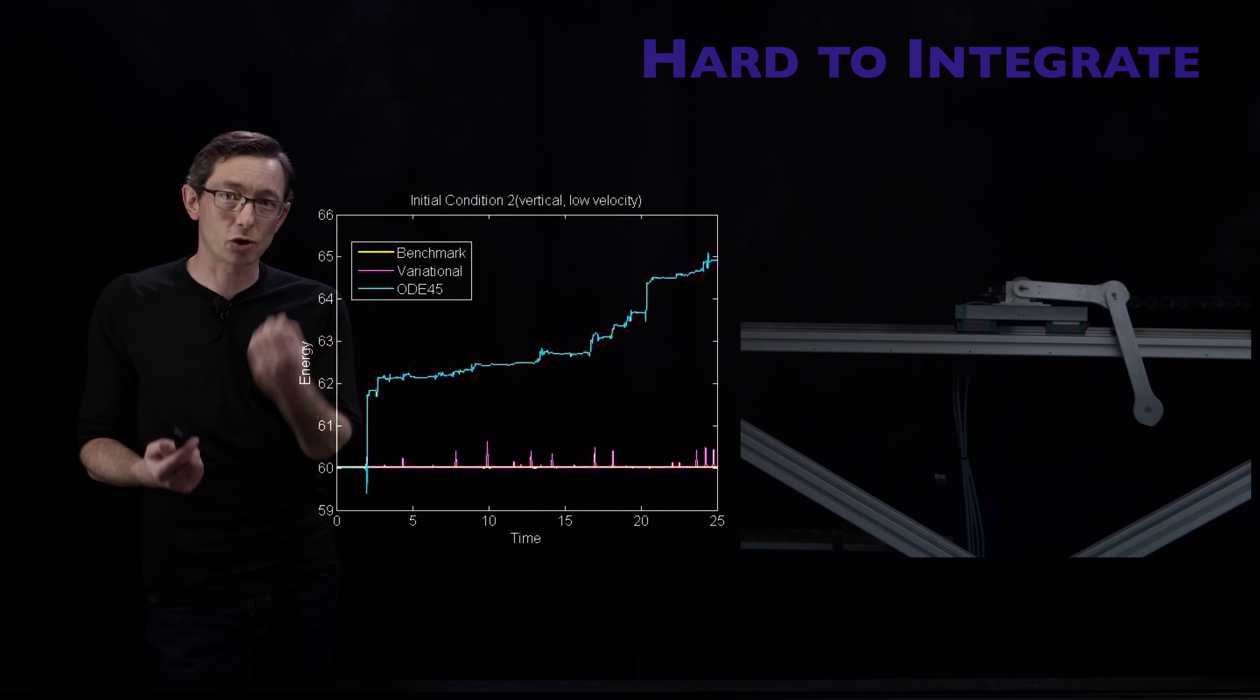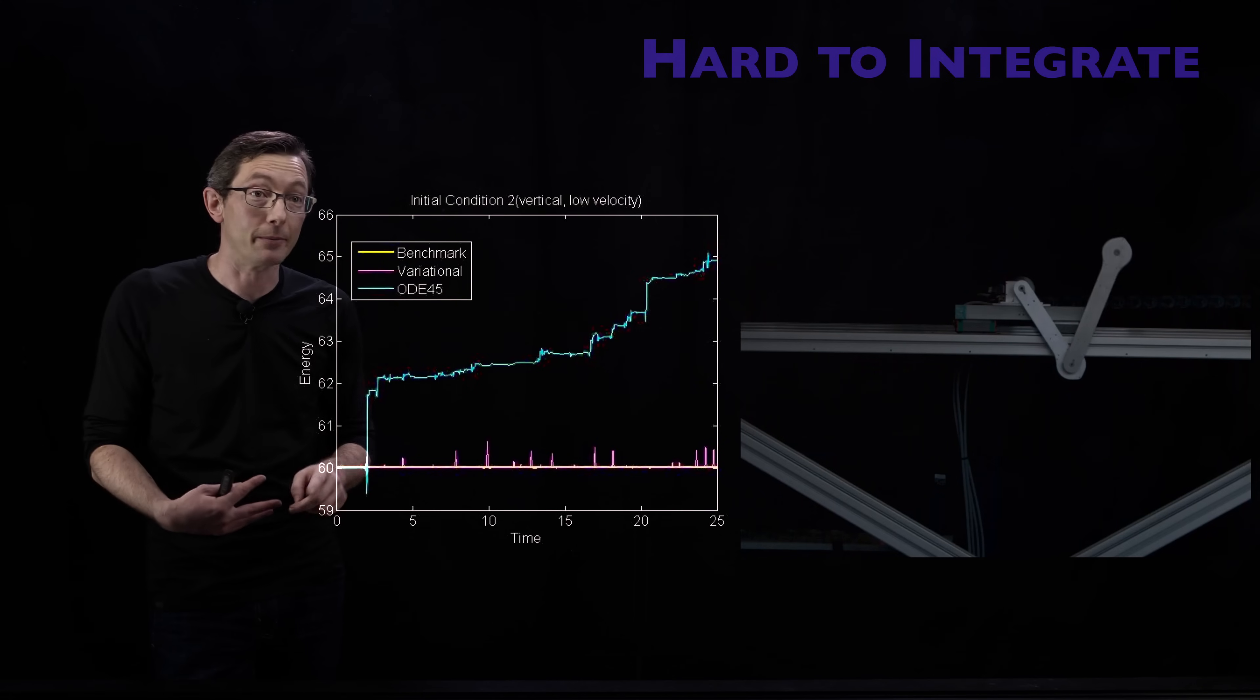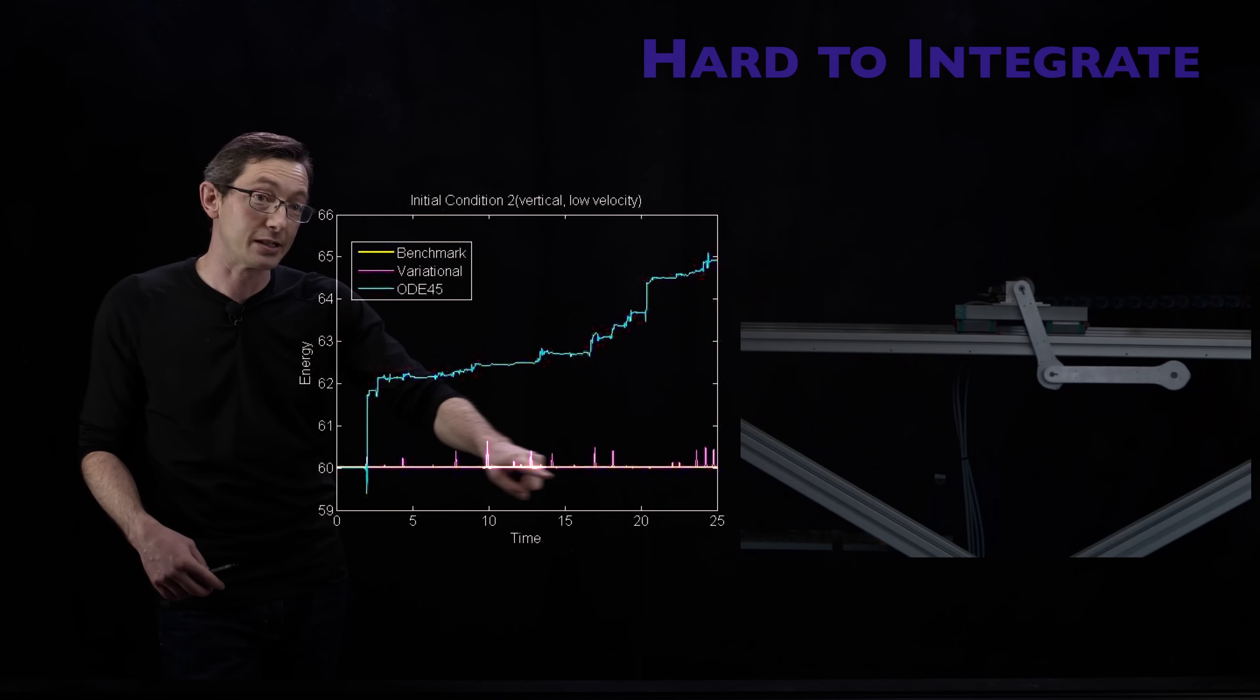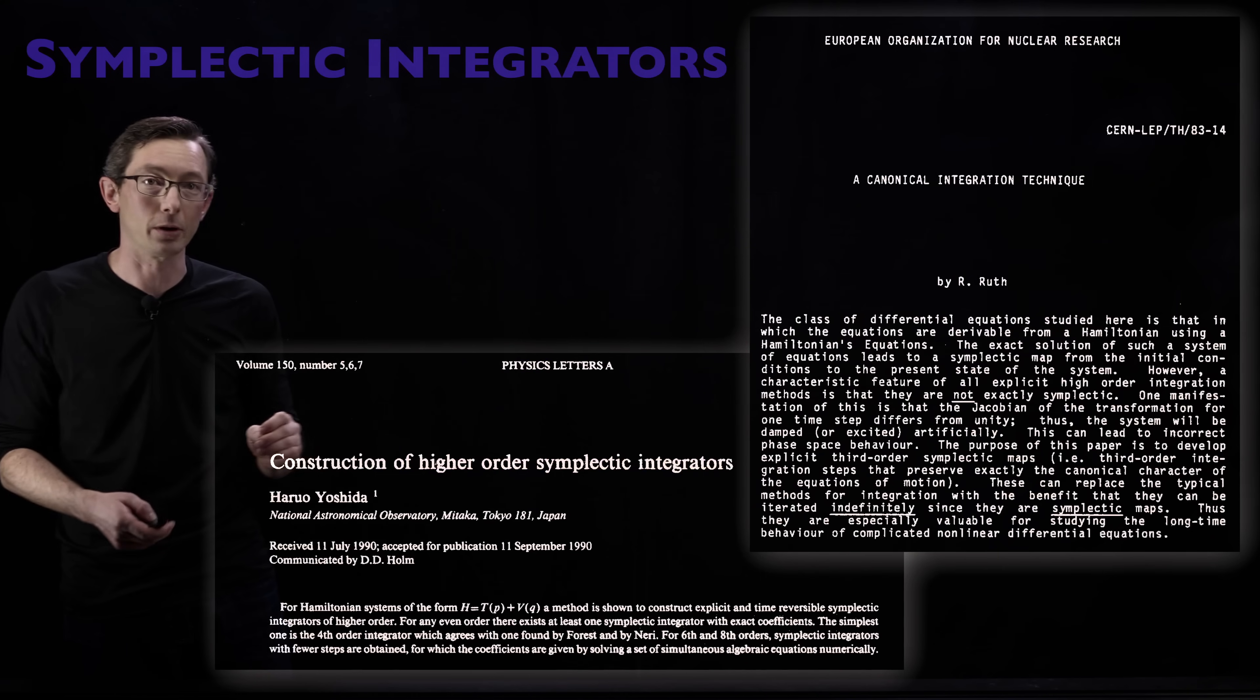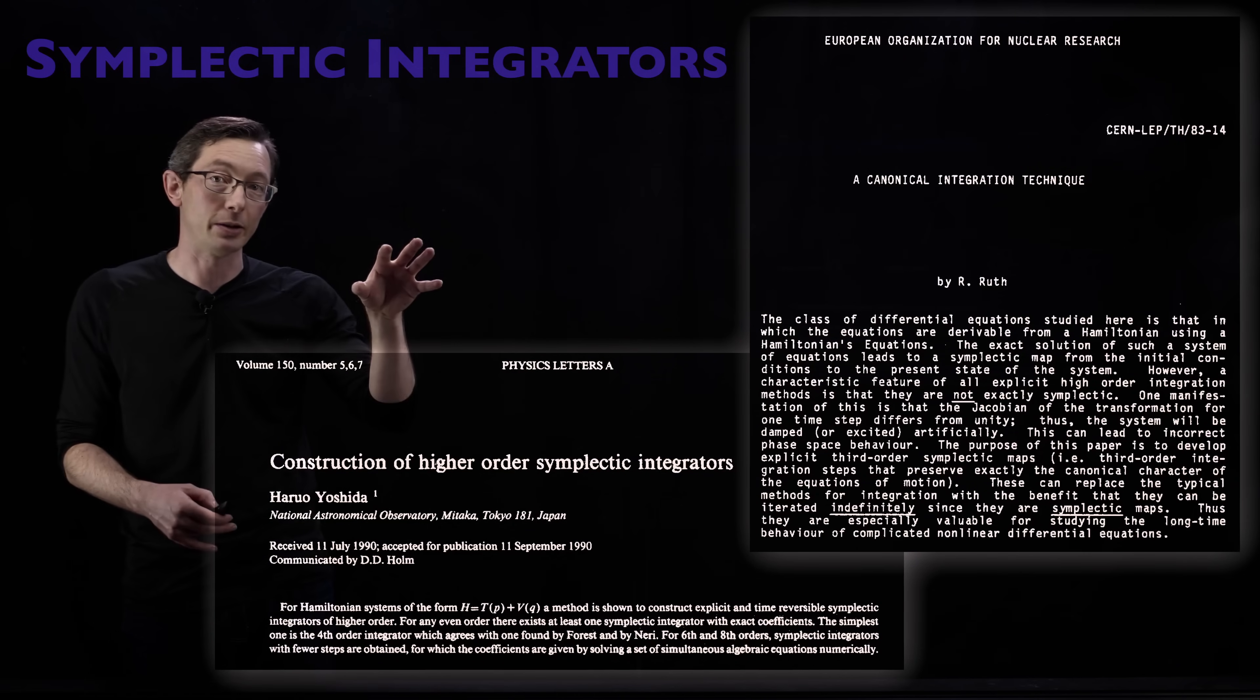So big idea. The structure of the Hamiltonian dynamics or the Euler-Lagrange dynamics really matter. And if you don't respect those, if you just naively integrate forward, you get bad results. But if you bake in the structure, you get much better results. So that's the idea of this Hamiltonian neural network is that we're going to be trying to bake in this symplectic structure into that neural network structure.